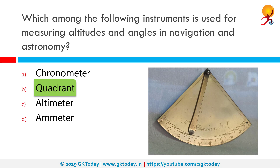Different versions of the instrument could be used to calculate various readings such as longitude, latitude and time of day. It was originally proposed by Ptolemy as a better kind of astrolabe. Several different variations of the instrument were later produced by medieval Muslim astronomers.